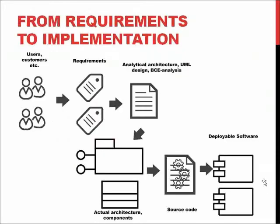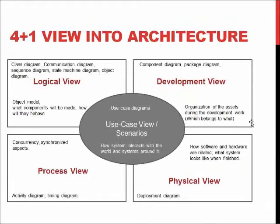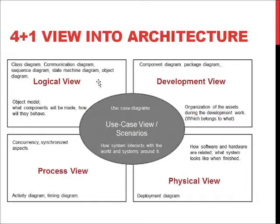One of these models is the 4+1 view into architecture. This division says there are four plus one views important for developing software. The logical view tells us what sort of objects we are going to build for the product — this includes all the classes, all the objects, how they communicate, how the system logistics works, and what sort of data we will be storing in the system.